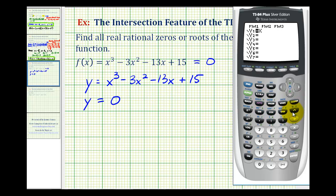So we have x to the third, here's the exponent key. Minus three x squared. For the exponent of two, we can press x squared, here. Minus thirteen x plus fifteen, we'll press enter.